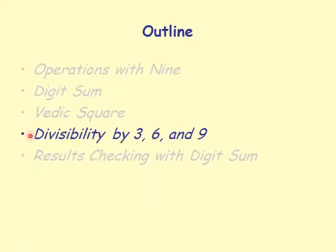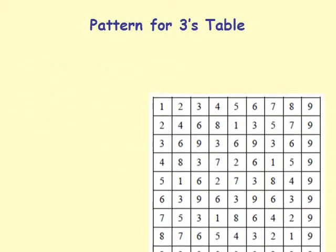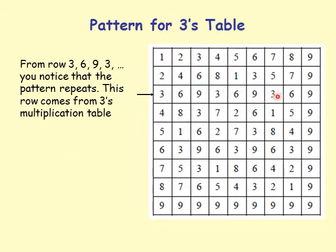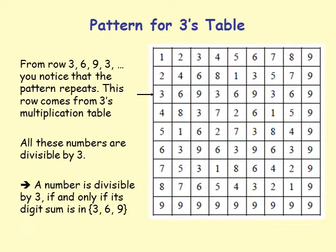Next section: we will discuss divisibility rules by 3, 6, and 9 using the Vedic square. Look at the pattern for the 3-times table row: it contains the numbers 3, 6, 9, 3, 6, 9 repeating. That means a digit sum of 3, 6, or 9 indicates a number is divisible by 3. A number is divisible by 3 if and only if its digit sum is in the set {3, 6, 9}.